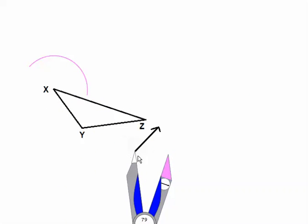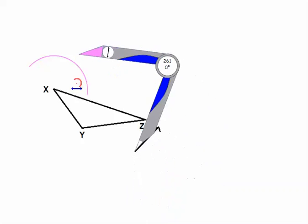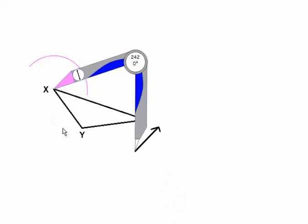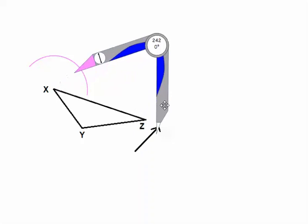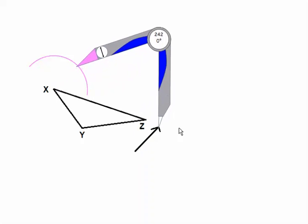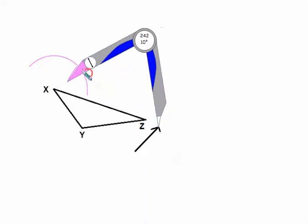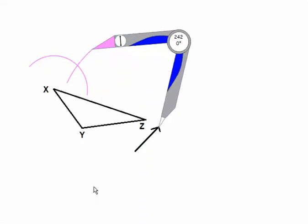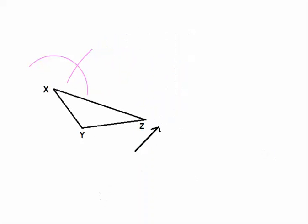Secondly, put the point of our compass at the endpoint of our arrow and put the pencil tip on X. Then move the point of the compass over to the tip of the arrow, keeping the compass the same size, and make a second arc. Where those arcs intersect, that is our new point X, so we put a point right there and call it X prime — that's like the apostrophe right by it. Please label it accordingly.